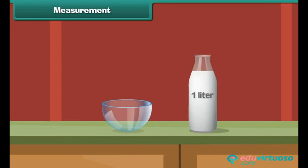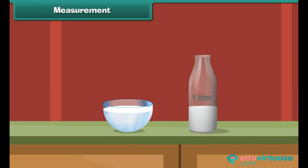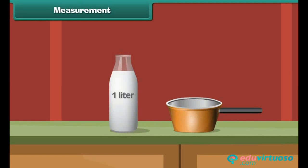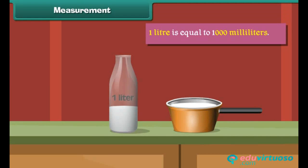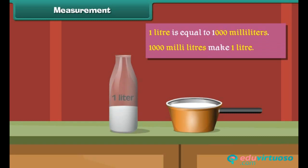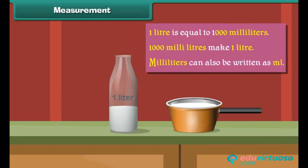Now let us pour milk from a one liter bottle into this bowl. We have seen that milk is still left in the bottle. This means this bowl holds less than one liter of milk. Similarly, this pan holds less than one liter of milk. One liter is equal to one thousand milliliters. This means one thousand milliliters make one liter. Milliliters can also be written as ml.